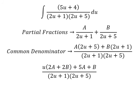Next we need to compare coefficients. About u, we have 5u, so 2A plus 2B equals to 5. About the number, we have 5A plus B equals to 4. We create a system of equations.